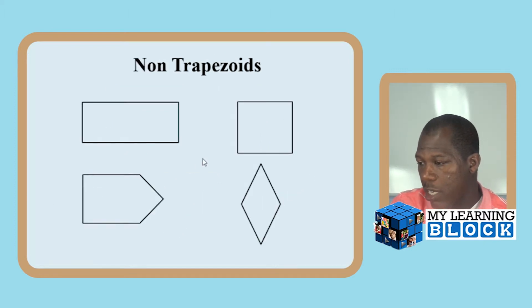Now let's look at the non-trapezoids and find out why they are not. This shape right here is a rectangle. It has four right angles, correct? But it has two pairs of parallel sides, thus making it a parallelogram, not a trapezoid. Make sure your child understands the difference between a parallelogram and a trapezoid. A parallelogram has two pairs of parallel sides, whereas trapezoid only has one.